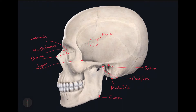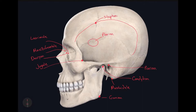Some of you might not be aware of a specific landmark called the temporal line. It's this ridge right here that goes up and around and down — it's called the temporal line. Where the temporal line intersects the coronal suture, right here, that's called the stefanion. So where the temporal line intersects the coronal suture is the stefanion.